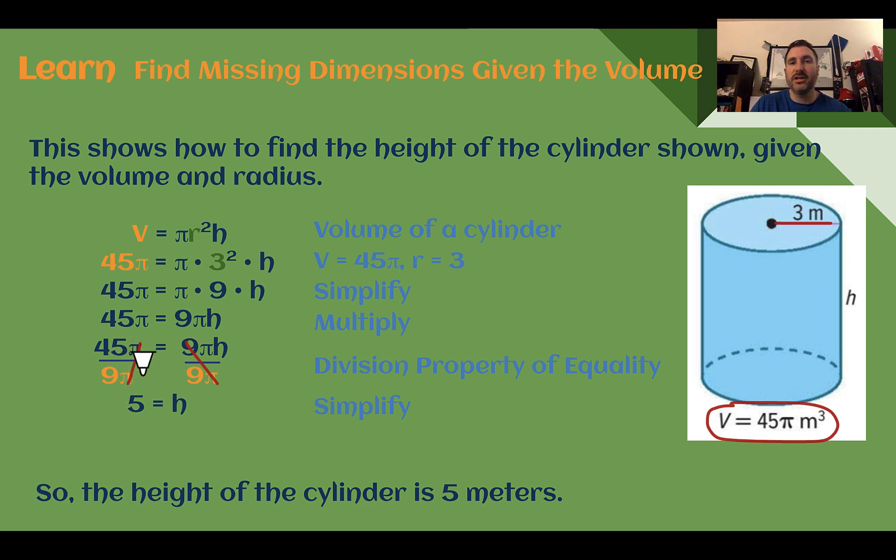To determine our missing height, then we're going to divide to get it alone. So if I divide both sides by 9π, I'm left with just h. 45 divided by 9 is 5. Pi divided by pi is 1, so that just cancels out. And I end up with my height is equal to 5.